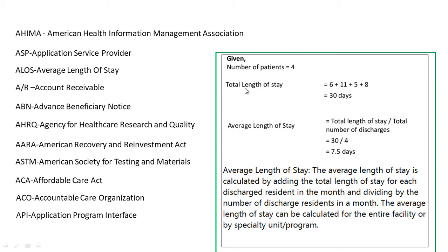So how is total length of stay calculated? 6 plus 11 plus 5 plus 8 equals the total. Average Length of Stay is total number of days stayed divided by total number of discharges. In this case, total number of stay is 30 days and total number of discharges is 4, so 30 divided by 4 gives us 7.5 Average Length of Stay days.